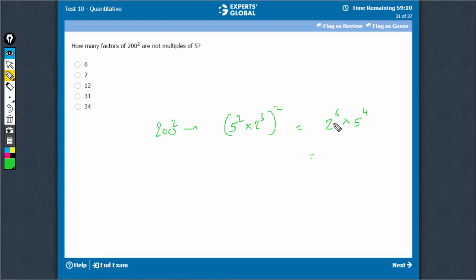So, in all, there are how many factors? It's a very important concept. If you are not aware of how to find the number of factors, please watch our relevant video. You have to add 1 to the powers of prime basis and multiply. So, total number of factors is 7 times 5. Total factors are 35.